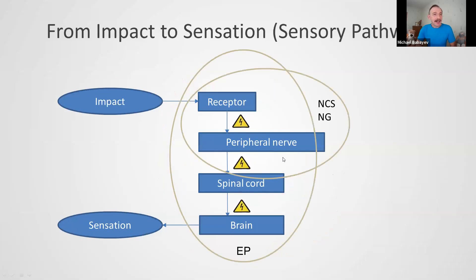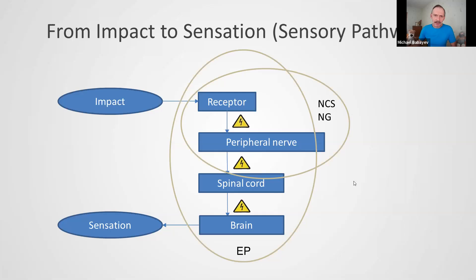Another paradigm: from impact to sensation — the sensory pathway. It is the backward pathway. Our skin contains a lot of small receptors. When you impact these receptors with some mechanical stimulus, temperature, and so on, they produce small electrical signals. These signals go through the peripheral nerve to the spinal cord, then to the brain, where we recognize them as sensation. On all stages, as previously, it is electrical signal transferring.